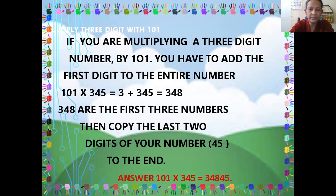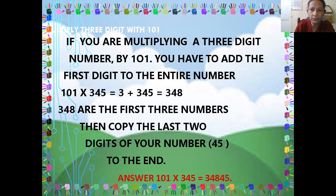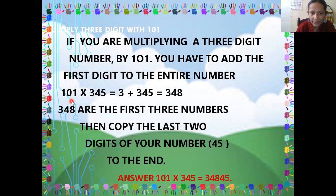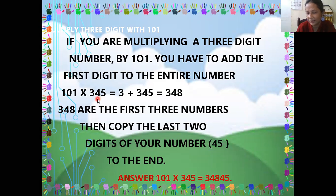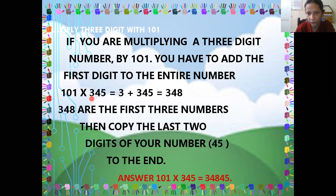Now you see this question — this is different. Here you have three digits. Now you have to multiply three digits with 101. My question is 101 multiplied by the three-digit number 345. This is a three-digit number, so here what you have to do is look at 345. The first digit here is 3.